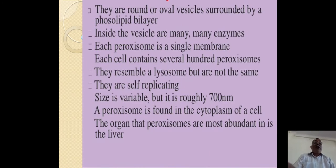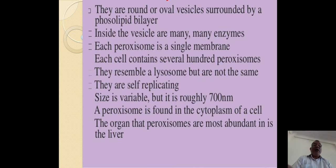They are round or oval vesicles surrounded by a phospholipid layer. Inside the vesicles are many enzymes. Each paroxysome has a single membrane, and each cell contains several hundred paroxysomes. They resemble lysosomes but are not the same — they are self-replicating. Size is variable but roughly 700 nanometers. A paroxysome is found in the cytoplasm of a cell, and the organ where they are most abundant is the liver.